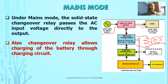In a transformer, if the primary has a higher number of turns and the secondary has a lower number of turns, it is a step-down transformer. If the secondary has a higher number of turns than the primary, it is a step-up transformer.